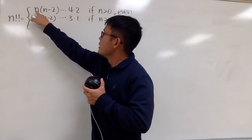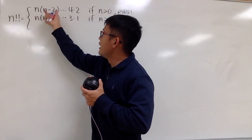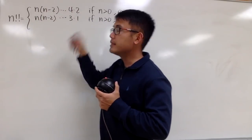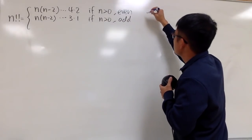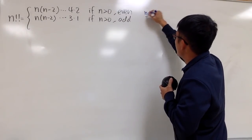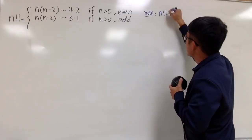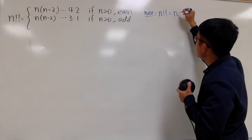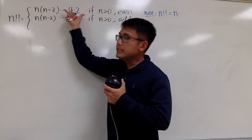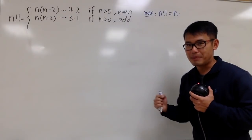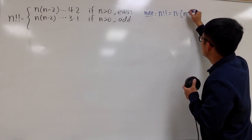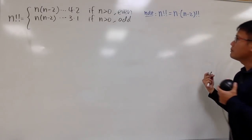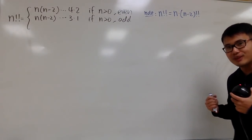As you can see, we start at n, and then this part is just n-2, n-4, and so on, right? So here, let me just make a note right here. We can write n double factorial as n times this part, which is just n-2 double factorial, right? It's pretty similar to the regular factorial, but this is what we have for the double factorial situation.